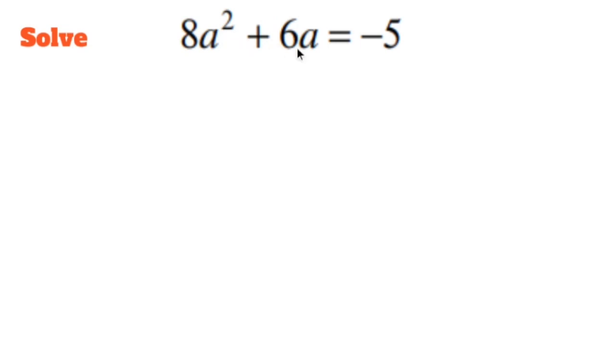Solve 8a squared plus 6a equals negative 5. This is a quadratic, so the first thing I want to do is get the right side or any side equal to 0. So let's do that by adding 5 to everything.